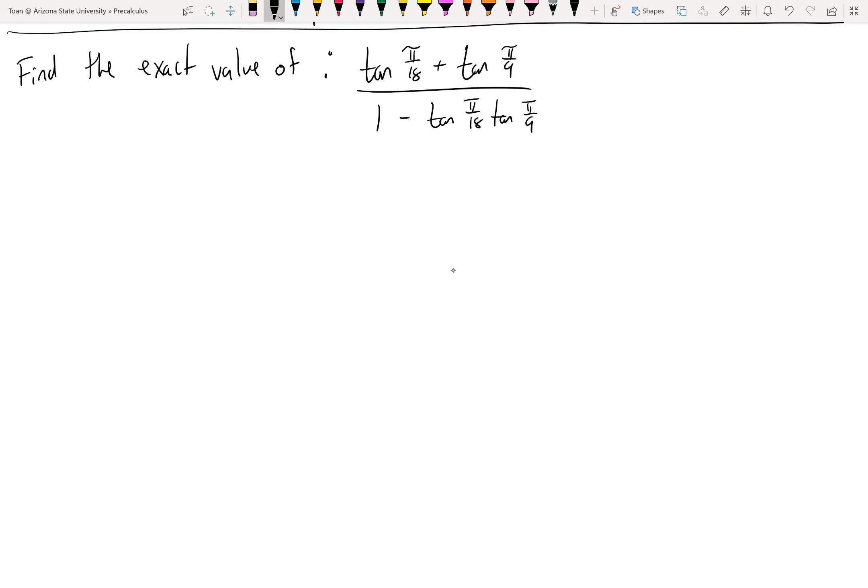We need to recognize that this fits precisely the tangent of a sum formula. So specifically, if you look into your reference sheet, you'll find that tangent of x plus y is equal to tangent of x plus tangent of y all over 1 minus tan x tan y. That is the identity. That's one of the sums and difference identities.